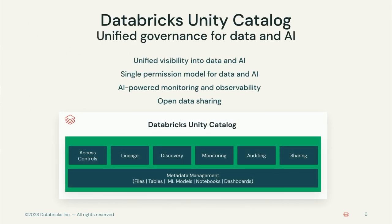Unity Catalog is a unified governance layer for data and AI within the Lakehouse platform. It provides unified visibility into data and AI, a single permission model so you don't have to worry about permissioning across multiple systems, AI-powered monitoring and observability, and open data sharing. These capabilities take shape across several feature buckets: access controls, lineage, improved search, monitoring, and auditing — all because metadata is brought to one central place.